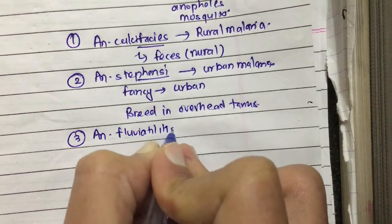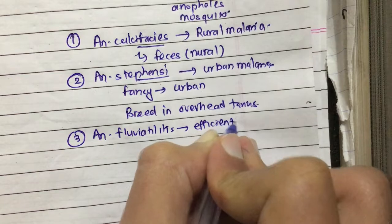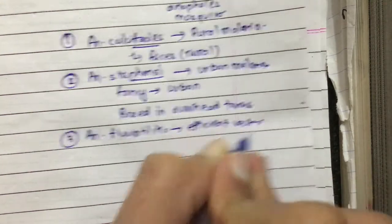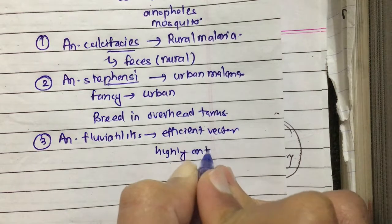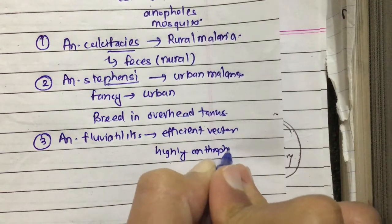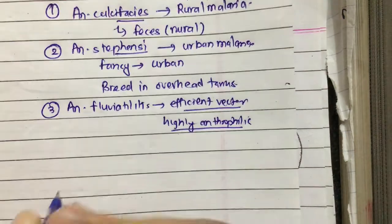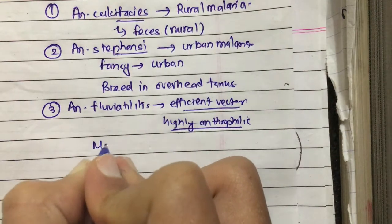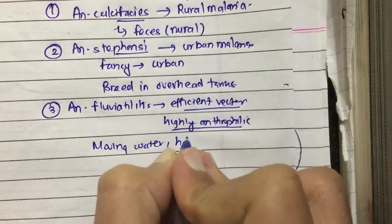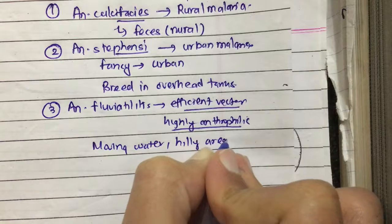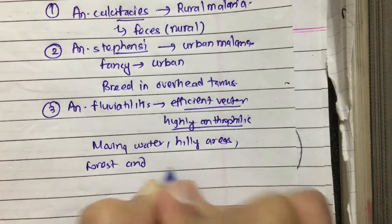The third important species is Anopheles fluviatilis. It is an efficient vector because it is highly anthropophilic — it preferentially bites humans. It breeds in moving water, hilly areas, forests, and forest fringes.